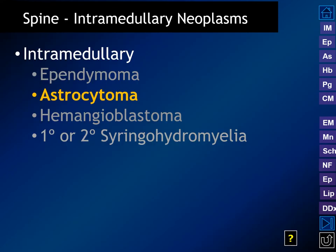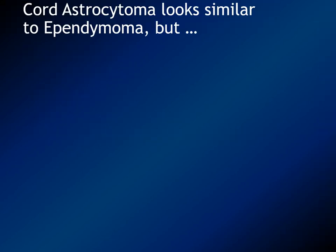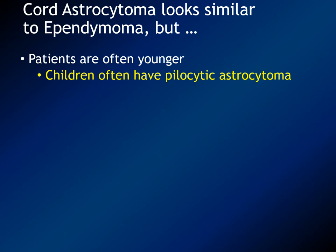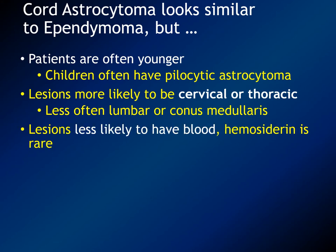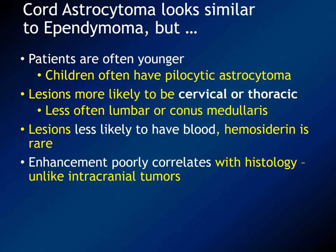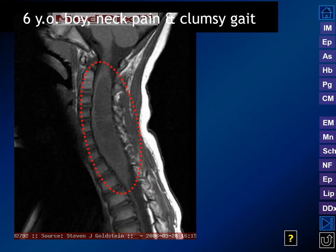Now turning to astrocytomas — remember ependymoma, astrocytoma, and hemangioblastoma are the three most common spinal cord neoplasms. Patients with astrocytomas are usually younger and may have pilocytic astrocytomas with intratumoral cysts. Lesions are most likely cervical or thoracic, less often lumbar or conus medullaris, distinguishing them from paragangliomas and myxopapillary ependymomas. Blood products and hemosiderin signal dropout are rare. Enhancement poorly correlates with histology, unlike in intracranial astrocytomas.